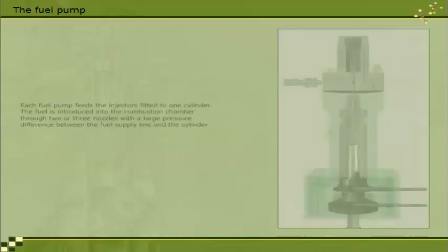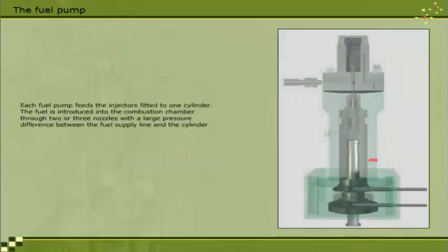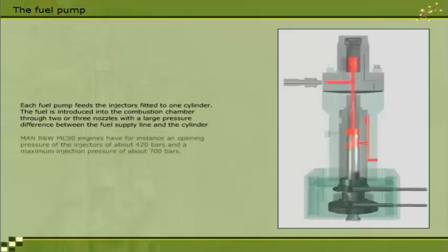Each fuel pump feeds the injectors fitted to one cylinder. The fuel is introduced into the combustion chamber through two or three nozzles, with a large pressure difference between the fuel supply line and the cylinder. MAN B&W MC 90 engines have, for instance, an opening pressure of the injectors of about 420 bars and a maximum injection pressure of about 700 bars.